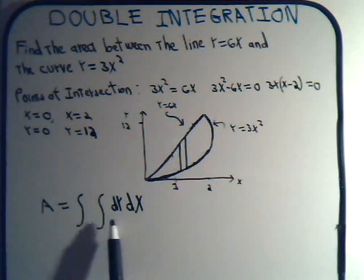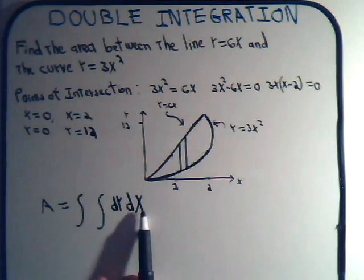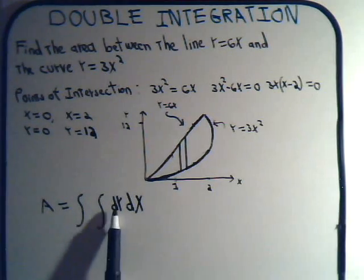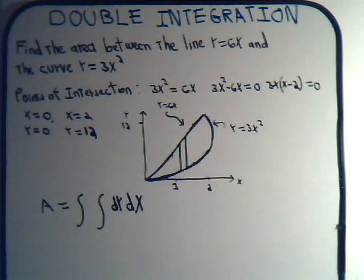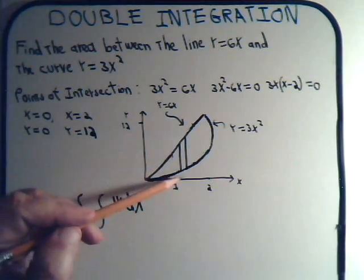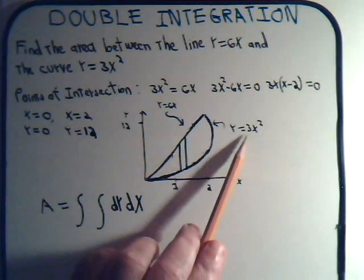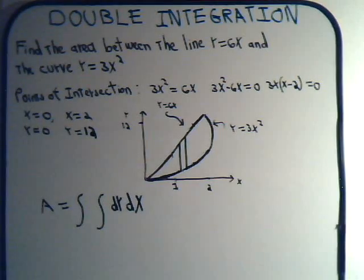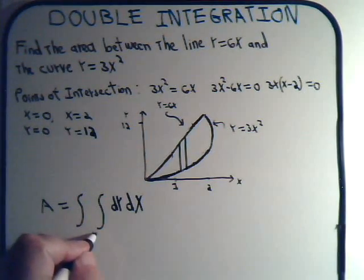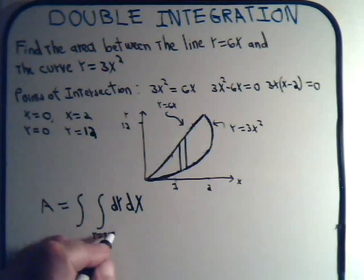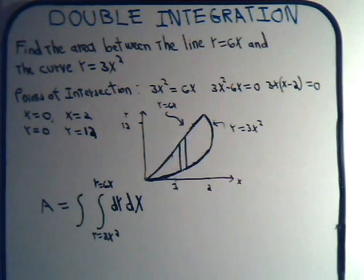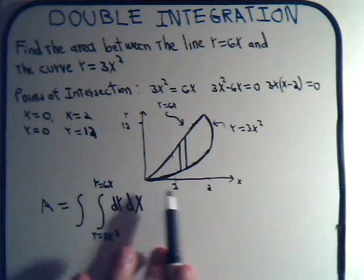dy dx. And the integral right next to it, that is a dy integral. And then the outermost integral will be a dx integral. What are the limits on this integral here for our dy? Well, let's see. We start down here at this curve, y equals 3x squared. And we proceed up to this line, y equals 6x. So, the lower limit, y equals 3x squared. And the uppermost limit, y equals 6x.